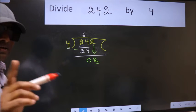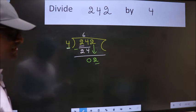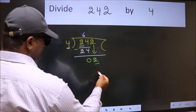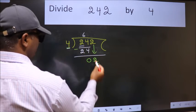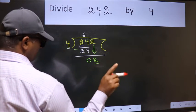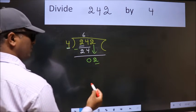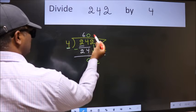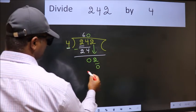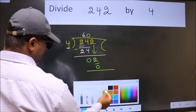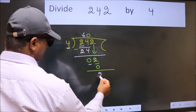Instead of that, what we should think of doing is, which number should we take here? If I take 1, we will get 4. But 4 is larger than 2. So what we do is, we take 0. So 4 into 0 is 0. Now we subtract. We get 2.